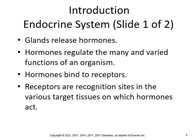The endocrine system releases hormones. Every time you talk about hormones, that's the endocrine system. Hormones regulate the many and varied functions of an organism. The hormones have to bind to receptor sites, and receptors are recognition sites in the various target tissues on which hormones act. Now the nervous system is totally different than the endocrine system — the nervous system is rapid, very fast, the neurotransmitters act very fast. But the endocrine system releases hormones into your bloodstream, and then it takes a while for the action to take place at the target tissue.